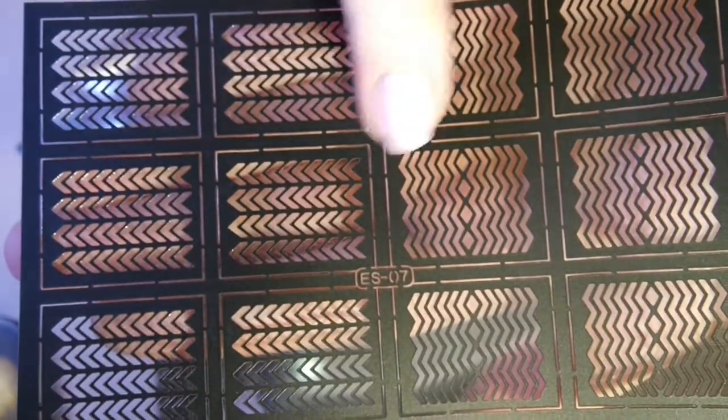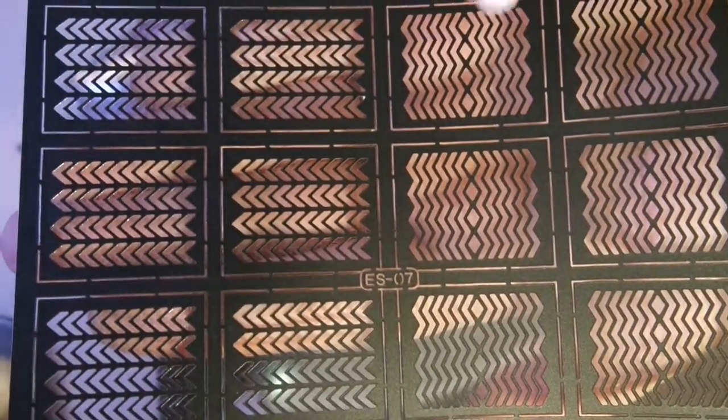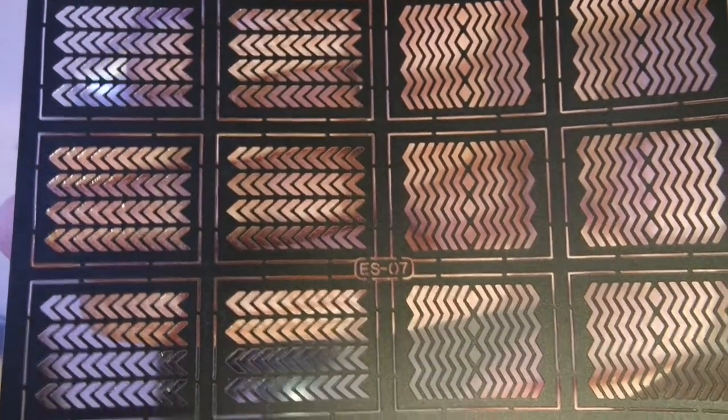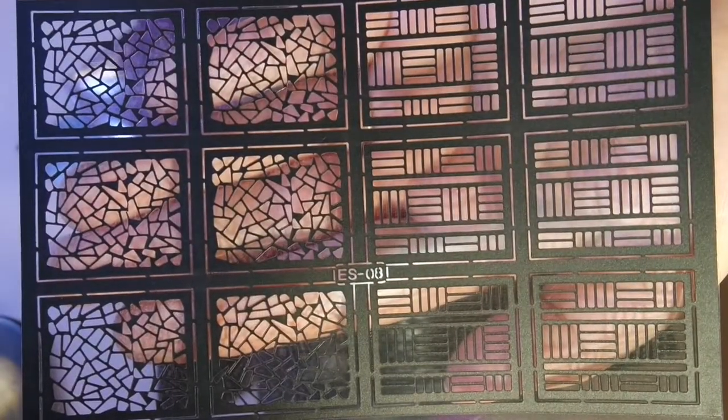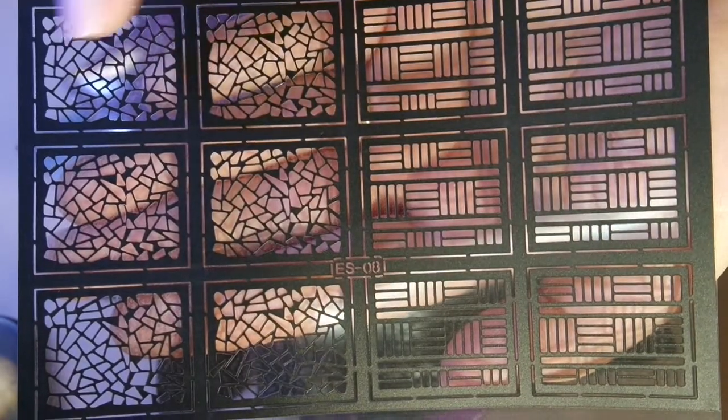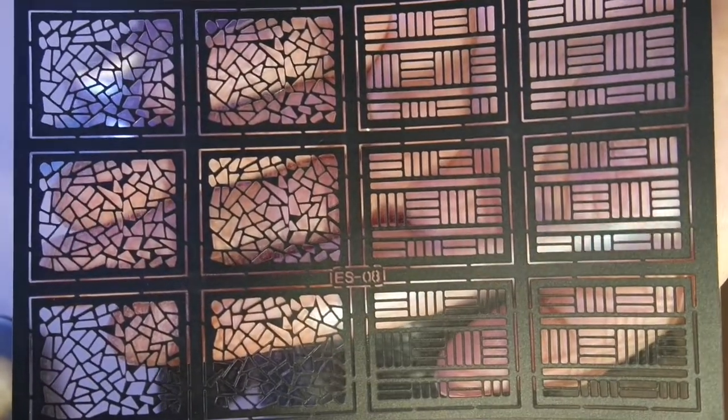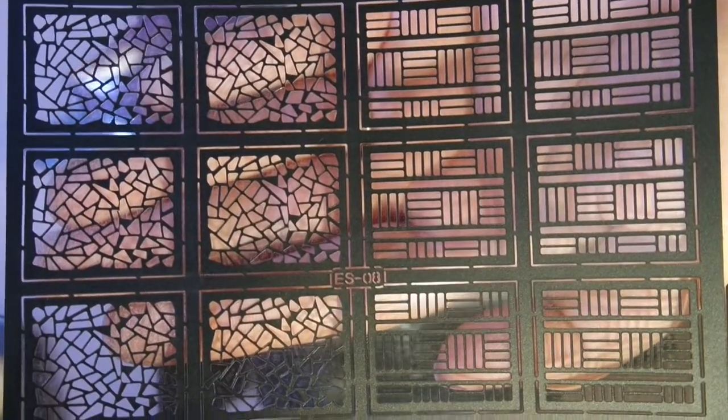ES07 are these arrows and another chevron design. But as you can see in the middle they are meeting. So they are creating kinda like a diamond design. That's really interesting too. ES08 is like this shattered glass. And then this is like squares with stripes in it.